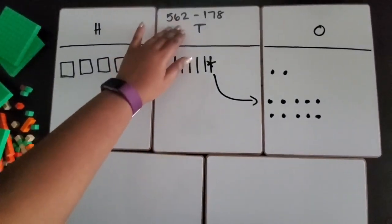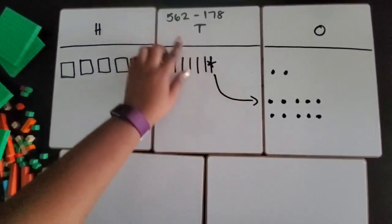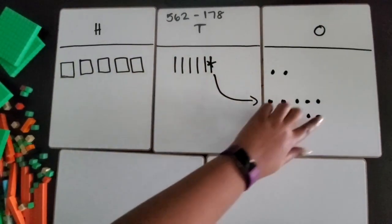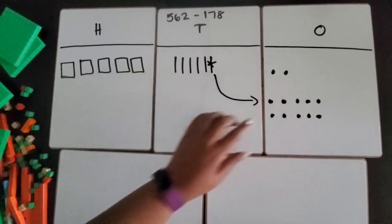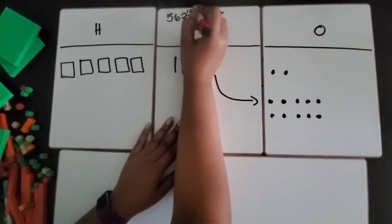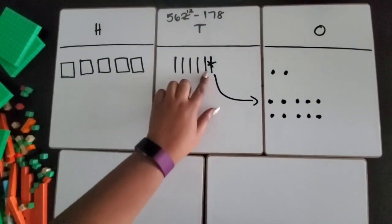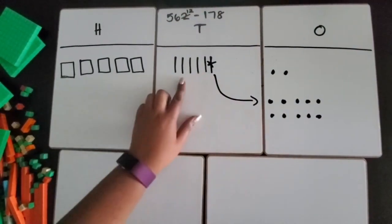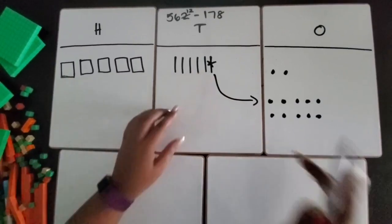Then I'm going to reflect up here what's happening down here. So I had 2 ones. Now I have 10 more, so 10 plus 2 is 12. I had 6 tens, but I traded one in for 10 ones, so now I have 5.